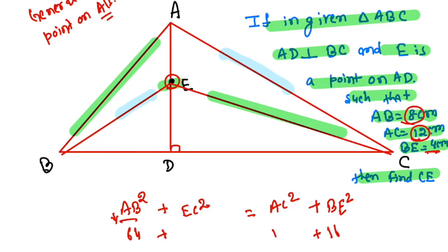Now we have AC is 12, that is 144 and we have to find EC². If you do this calculation, our EC² is nothing but 144 plus 16 minus 64 is 96.